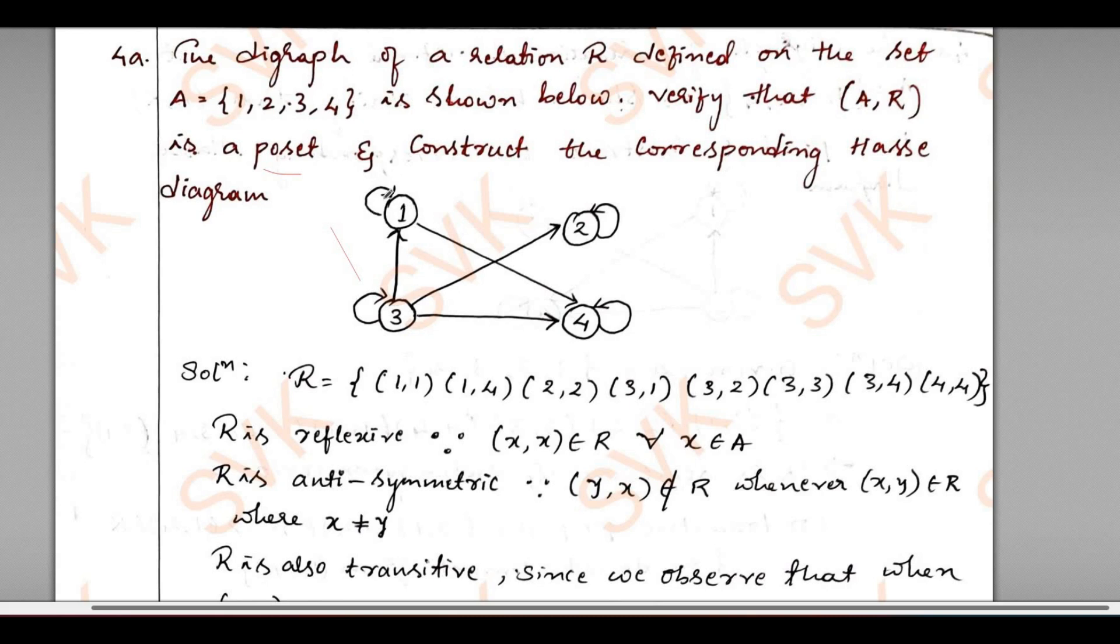There is a loop for 1, so I will take (1,1). There is a direction from 1 to 4, so (1,4). There is a loop for 2, so (2,2). There is a direction from 3 to 2. In the directed graph, therefore (3,1), (3,3) since it is a loop, (4,4) since it is a loop, (3,4) since there is a direction. So this is the relation we have got.